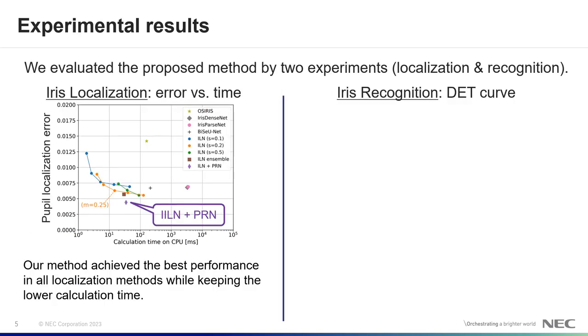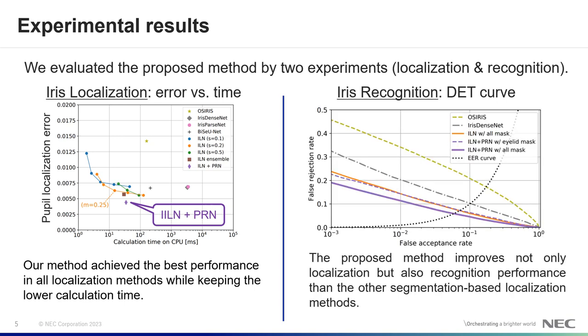We evaluated the proposed method by two experiments. The left side shows iris localization results. The vertical axis is pupil localization error, and horizontal is calculation time. Left bottom side is better in this figure. Our method achieves the best performance in all localization methods while keeping the lower calculation time.